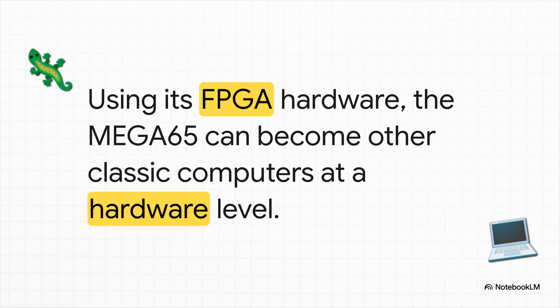What's truly mind-bending is how they're pulling this off. The Mega 65 is built around something called an FPGA. You can think of it like a block of digital clay that can be reshaped to become almost any kind of computer chip. So it isn't just imitating old machines with slow software emulation — it's literally reconfiguring its own hardware to become them. It can become a perfect Commodore 64 or even a TI-99/4A.